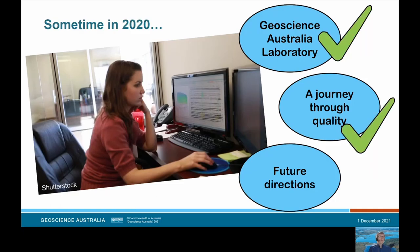Returning to Joe: we've covered an overview of the Geoscience Australia Laboratory and I've taken you on a quick journey through quality, leaving you with some concepts and tools to consider in your own work. So what are the future directions for the Geoscience Australia Laboratory? How are we applying and developing those concepts? How are we helping Joe and people like her make decisions today and in the years ahead?